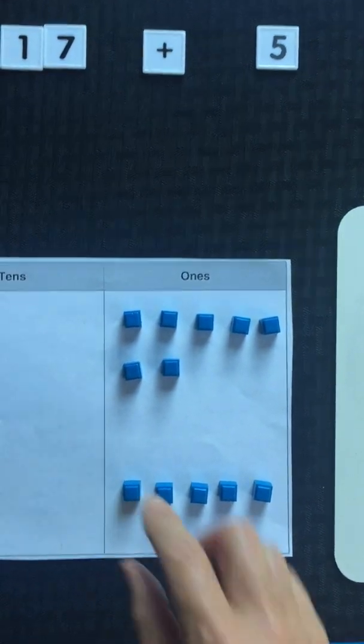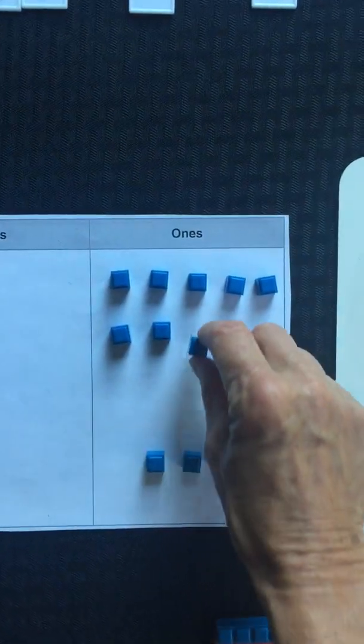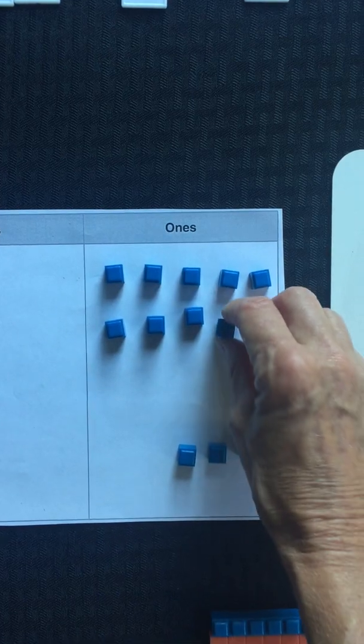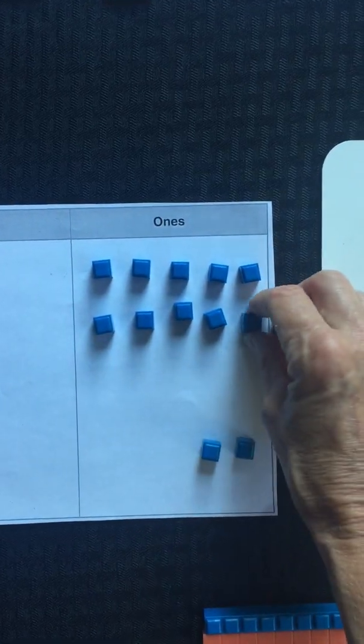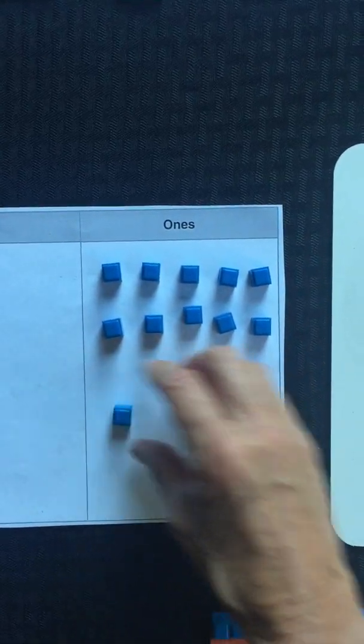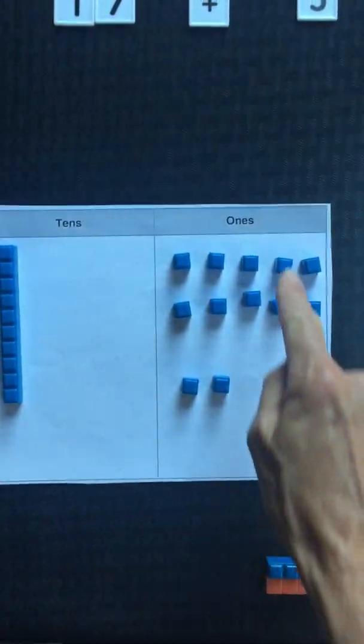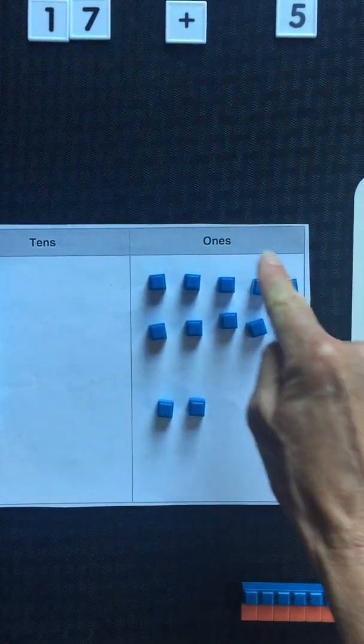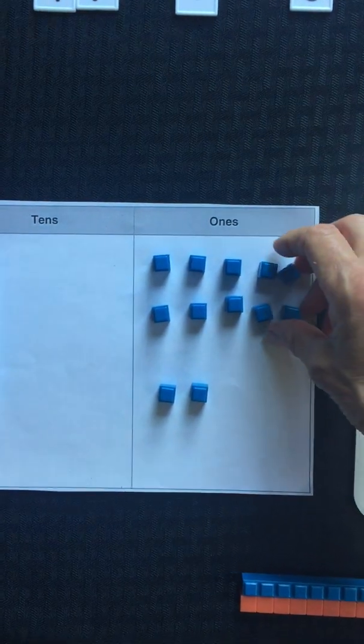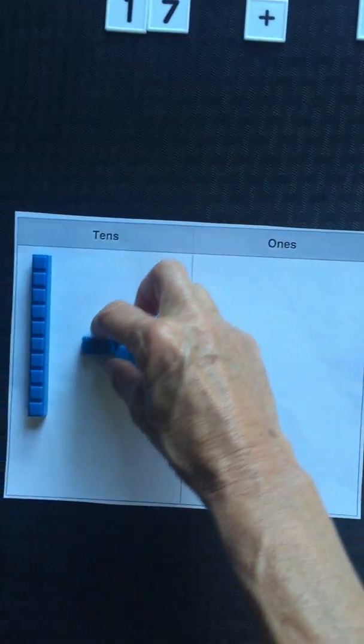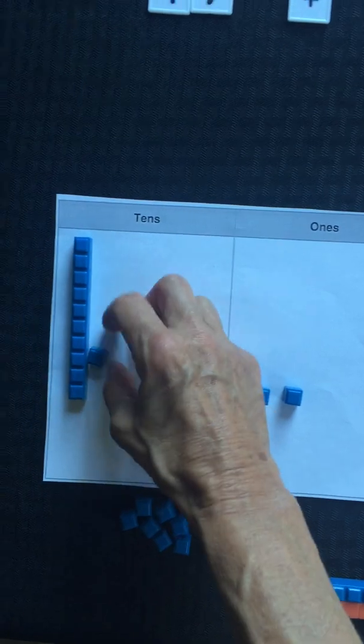When I add five more ones, one, two, three, four, five, I can take these individual ones and group those 10 together and trade them for another 10 bar.